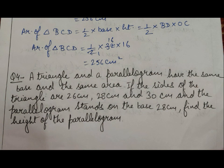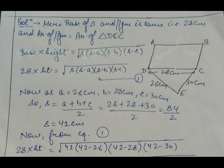Next question: a triangle and a parallelogram have the same base and the same area. The sides of the triangle are 26 cm, 28 cm, and 30 cm, and the parallelogram stands on the base 28 cm. Find the height of the parallelogram. In the figure, ABCD is the parallelogram and DEC is the triangle, both sharing base DC.